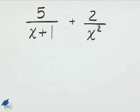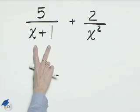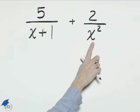When we're adding fractions, we need to find the least common denominator. The LCD here will be the product of x plus 1 and x squared.